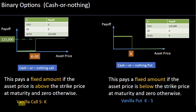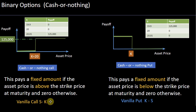One reason binary options resemble bets is that the payoff is discontinuous. In a plain vanilla call option the payoff is the underlying minus the strike, so when the underlying goes above $20 to $20.01, the payoff is just one cent, and it increases gradually. But in a cash-or-nothing binary option, the payoff suddenly jumps from zero to the fixed amount — in this case $125,000.